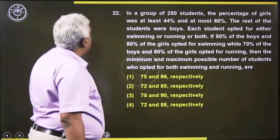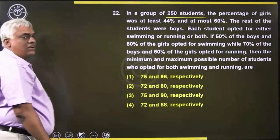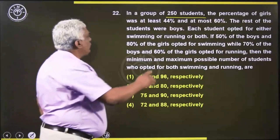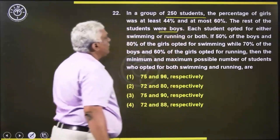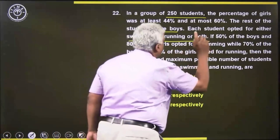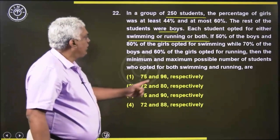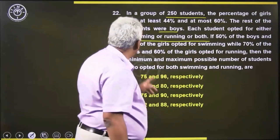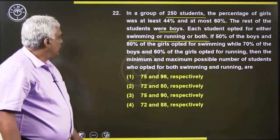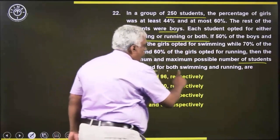Last one. In a group of 250 students, the percentage of girls was at least 44% and at most 60%. The rest of the students were boys. Each student opted for either swimming or running or both. If 50% of boys and 80% of girls opted for swimming while 75% of boys and 60% of girls opted for running, then find the minimum and maximum possible number of students who opted for both swimming and running.